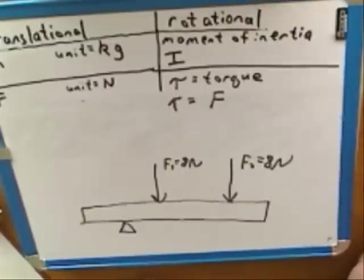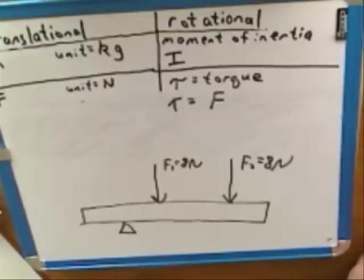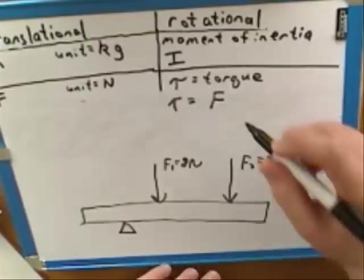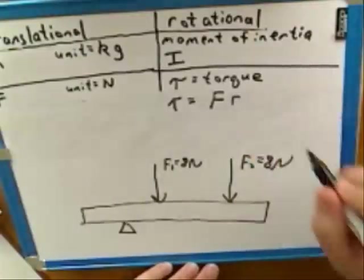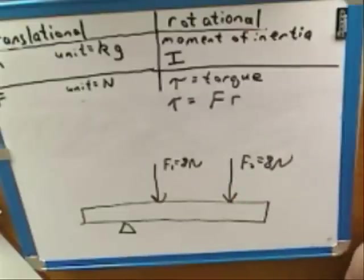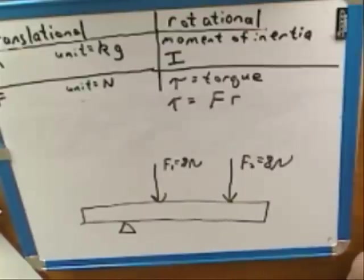Something else that matters here is how far you are from the pivot. We need a symbol for how far the force is from the pivot — we can call that R. We use R for distance very often. It's the distance between where the force is being applied and the pivot.